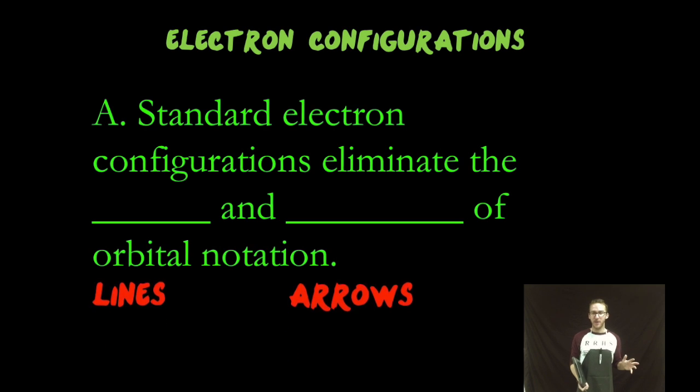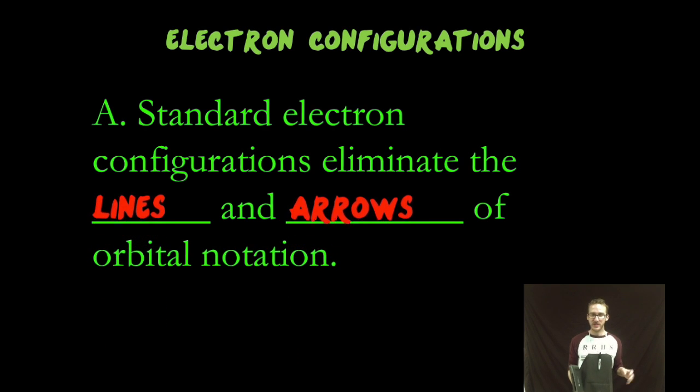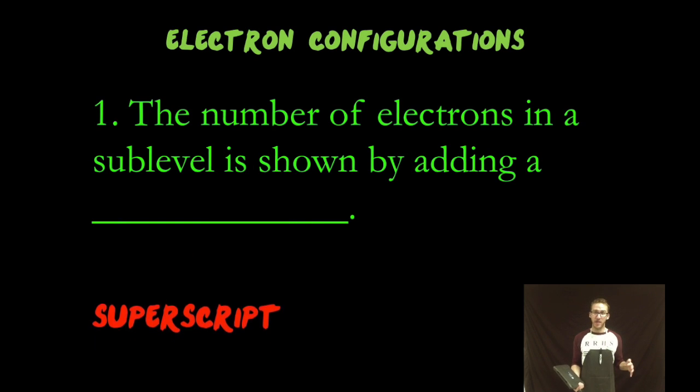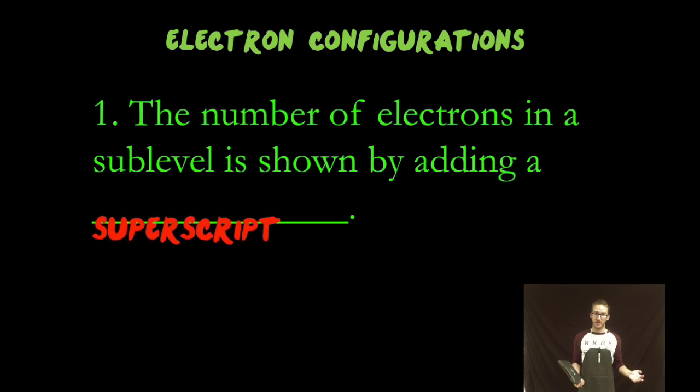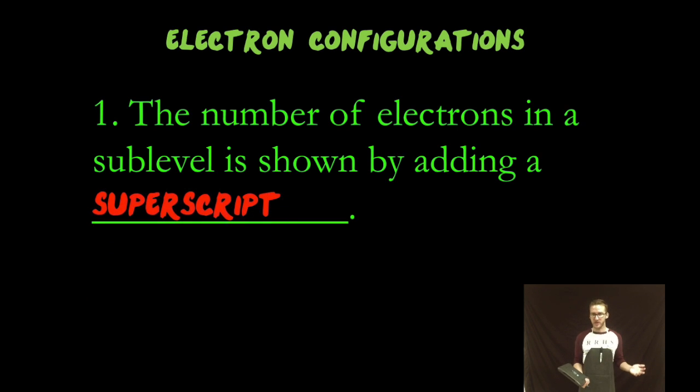Okay, so the great thing about standard electron configurations is they make your life a little easier. They eliminate the lines and the arrows of orbital notation. Basically, we take the number of electrons in a sub-level that we used to use arrows to represent, and we're now going to show them using a superscript. And that's super, just like you.